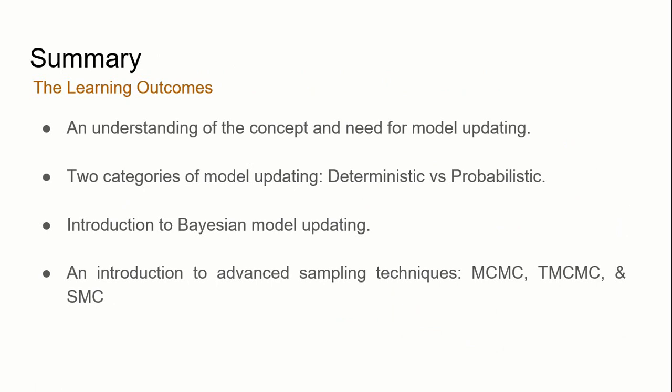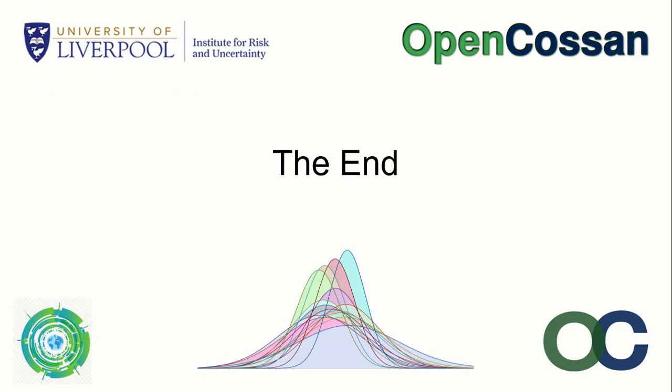Before ending, a brief summary of what we have learned from this two-part lecture series. We should now have a better understanding of model updating and the motivation behind it. Model updating can be categorized as deterministic versus probabilistic. We should also have a better understanding of Bayesian model updating and the motivation behind the use of advanced sampling techniques MCMC, TMCMC, and SMC, as well as the differences between each of these algorithms and how they work. With that, we have come to the end of this two-part series lecture. Thank you so much for your undivided attention.